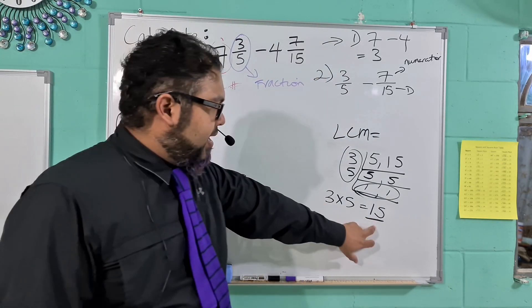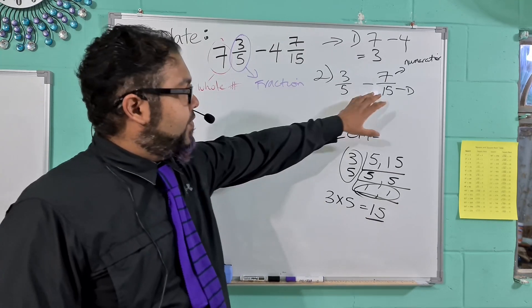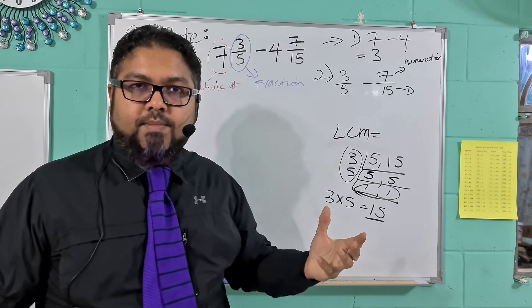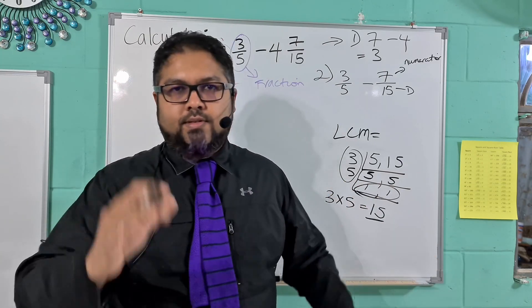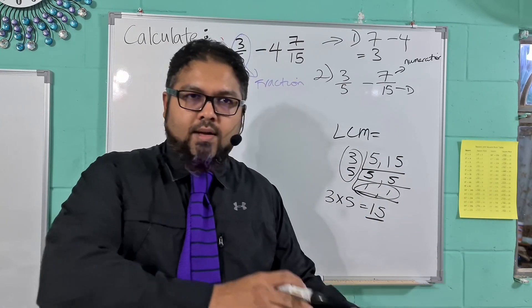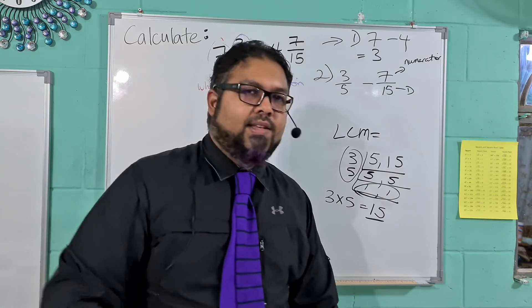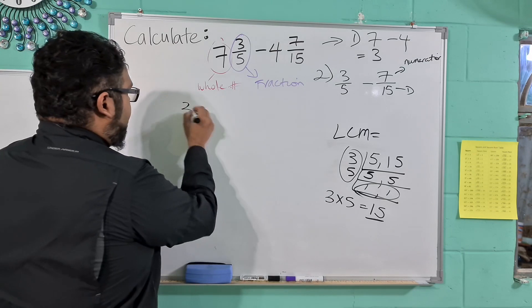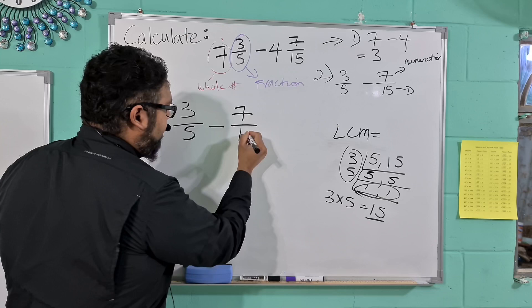So we have the LCM and the LCM is basically a number that 15 could be divided by and 5 can be divided by. It's a common multiple. We did this a lot in past videos. So I'm not going to go and show you guys prime factorization and why that method is super long and inconvenient and why you all should use this method. Go back a couple of posts, you'll find that video there. So we'll bring this across here. So we have 3 over 5 minus 7 over 15, and we have the LCM here.